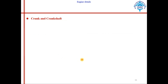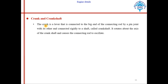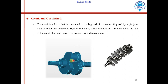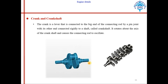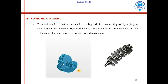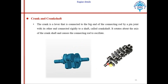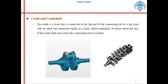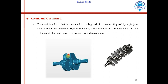Next are the crank and crankshaft. The crank is a lever connected to the big end of the connecting rod by a pin joint, with its other end connected rigidly to a shaft called the crankshaft. It rotates about the axis of the crankshaft and causes the connecting rod to oscillate. The crankshaft shown for a single-cylinder engine is used in bikes, and the shaft for multi-cylinder engines is used in cars or heavy automobiles. The big end of the connecting rod is connected to the crank pin.